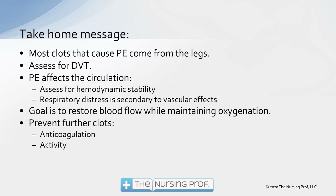The take-home message is that most clots causing PE come from the legs, so that's where we should be assessing — assess for DVT. A pulmonary embolism affects the circulation, so assess for hemodynamic stability. Respiratory distress is secondary to the vascular effects causing the VQ mismatch. We want to restore blood flow while maintaining oxygenation and prevent further clots by getting the patient up and moving to squeeze the calf, combined with anticoagulation.